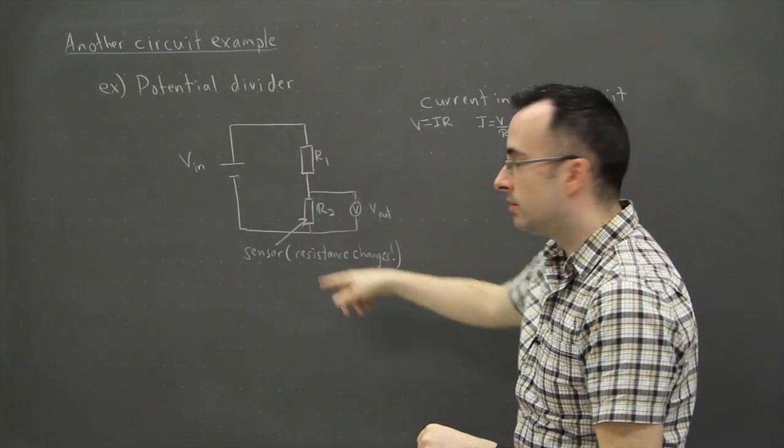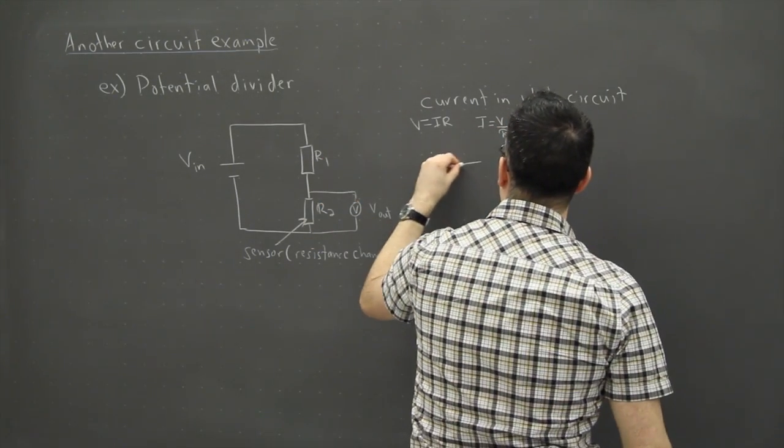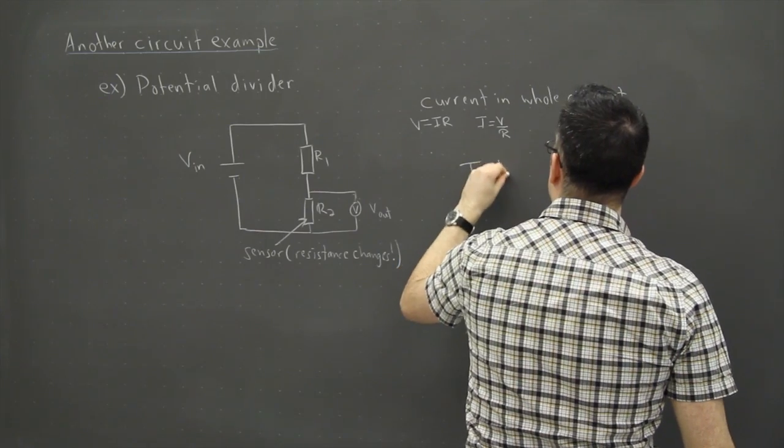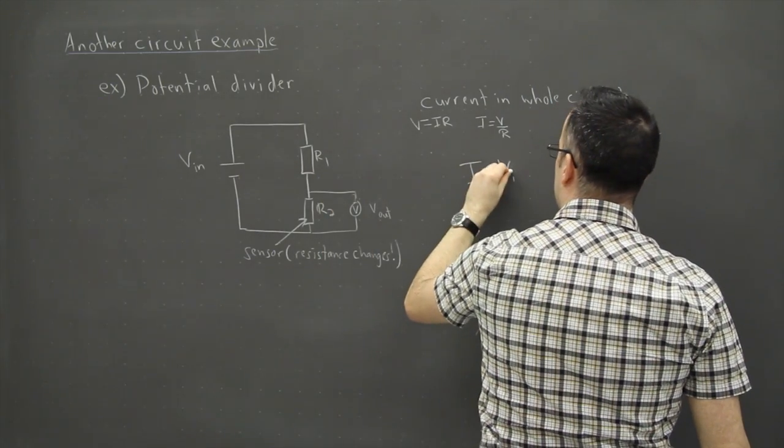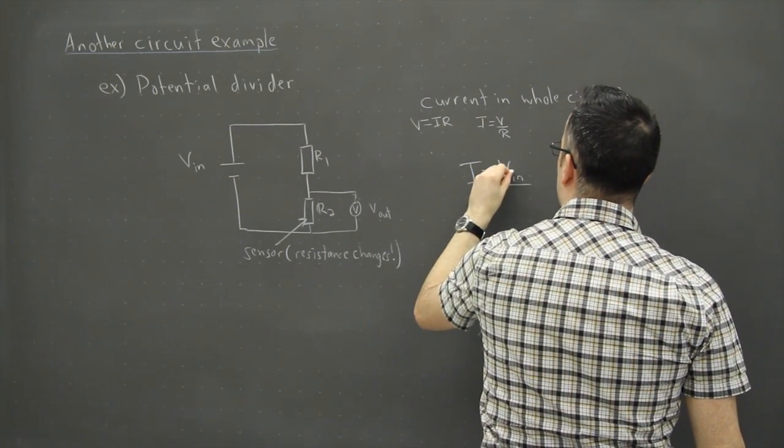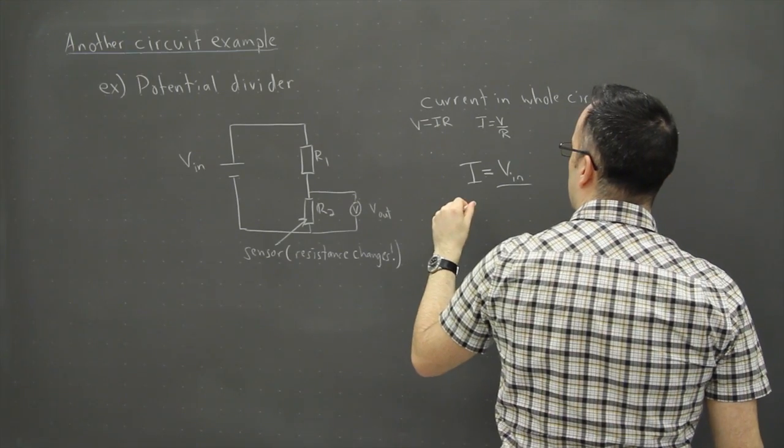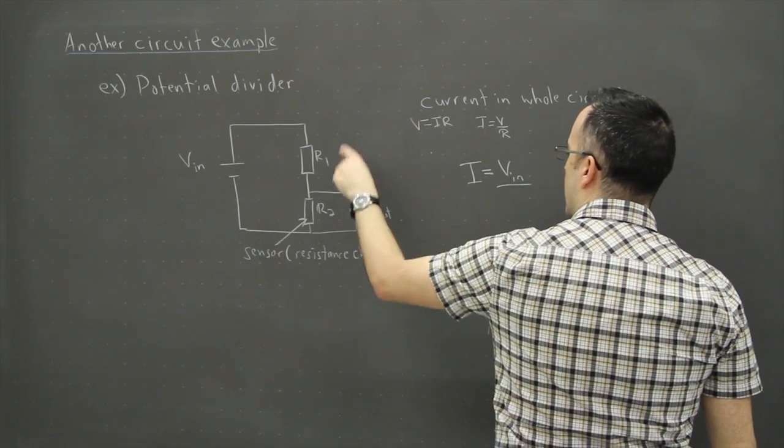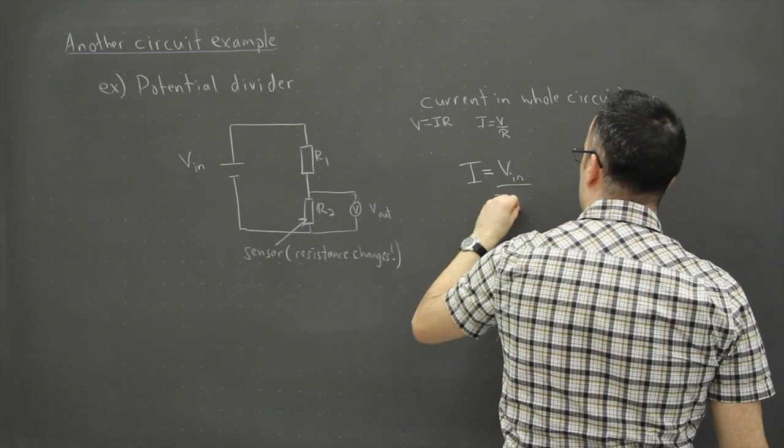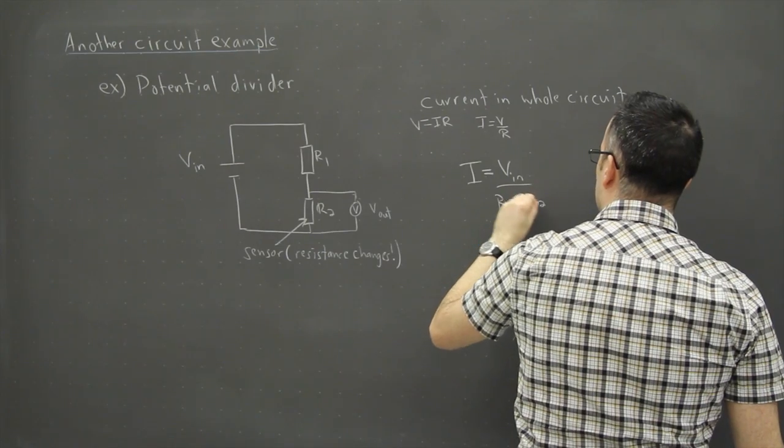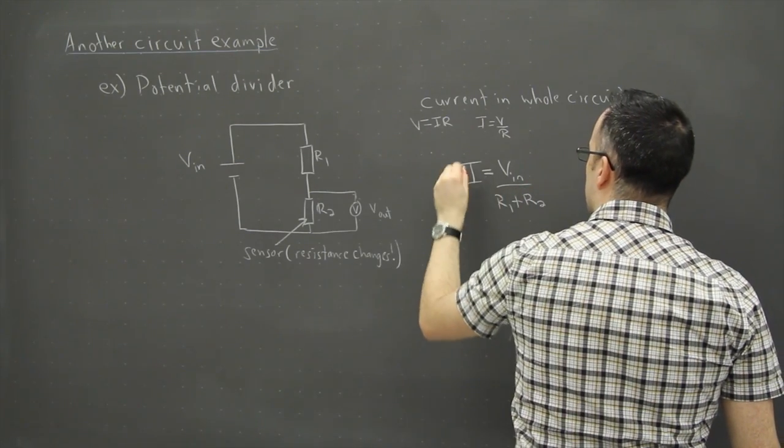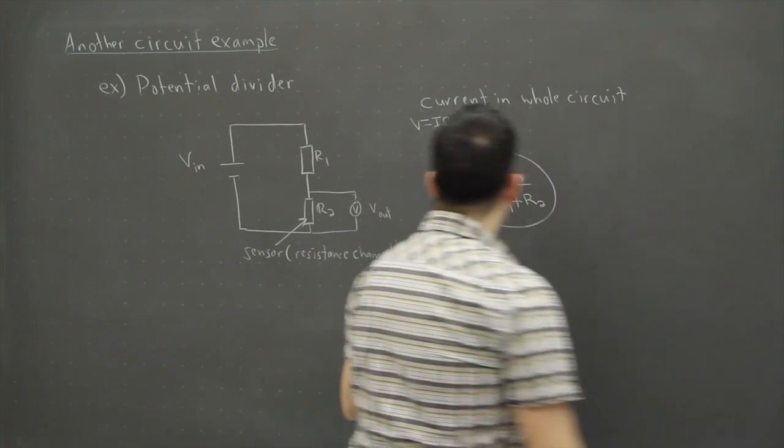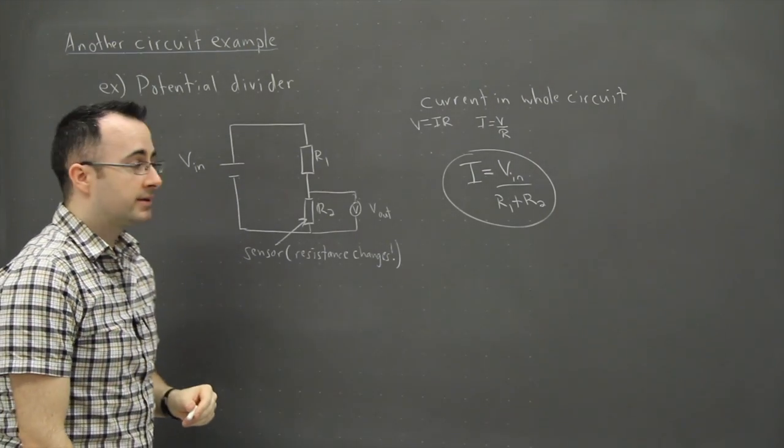Except I don't just have one resistor, I have two of them, and these are in series with each other. So that means then I can say that I equals V, and I'm going to label it properly, so Vin, divide that by, in this case here, we'll have to add up the two resistance values. So R1 plus R2. This is going to be the first part here. So that's the current in the entire circuit.